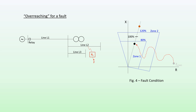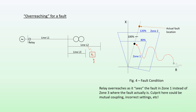The actual fault lies in the Zone 3 region — that is where the actual fault location is. So we can see that the relay overreaches, as it sees the fault in Zone 1 instead of Zone 3 where the fault actually is. The culprit here could be mutual coupling, incorrect settings, and so on.